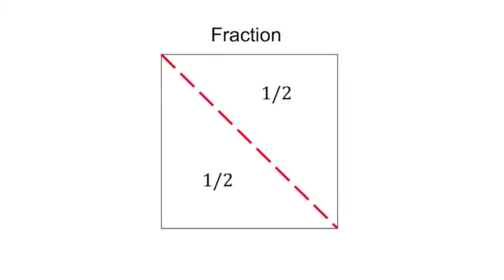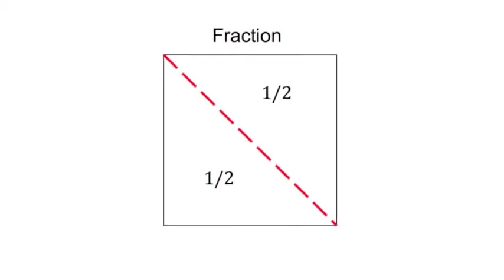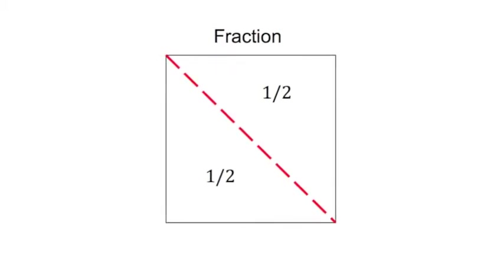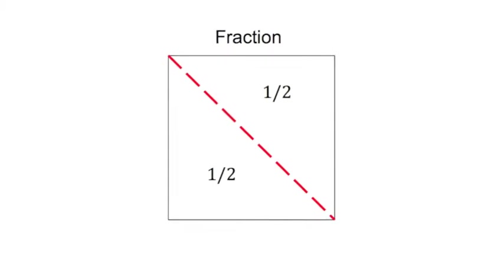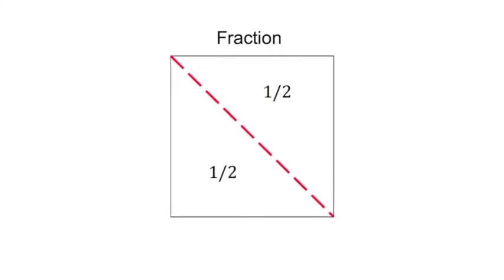The valley fold divided the square into two equal parts. Each part is one half. The key in fraction is same size.